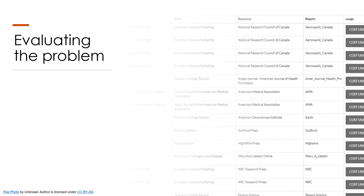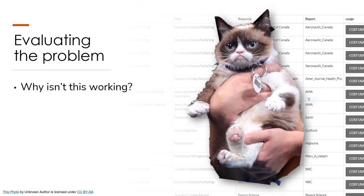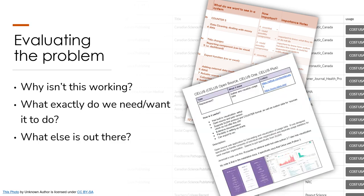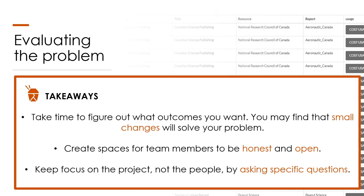After expressing our frustrations, it was time to focus on the facts. Why wasn't this working? Could we adjust our approach, or were we attempting a project beyond our capacity? We identified what we needed in a usage database, assigned weight to each priority — determining whether items were essential or nice to have — and did a cursory look at potential third-party solutions. When evaluating your own projects: establish desired outcomes before exploring new solutions, create spaces for team members to be honest about the team's ability to continue, and always keep focus on the project, not the people.